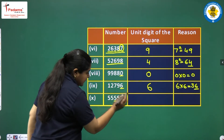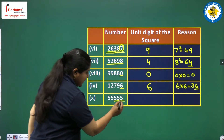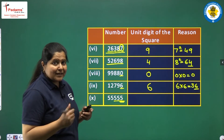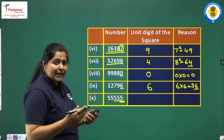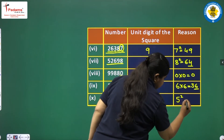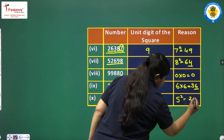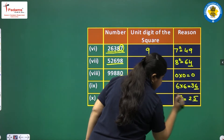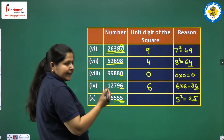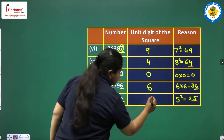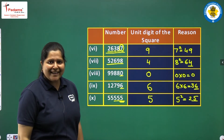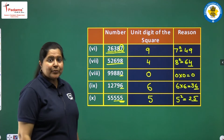For 55,555, the last digit is 5, and on squaring 5 we get 25, so the ones digit of the square is also 5. This was question 1.